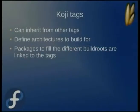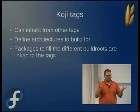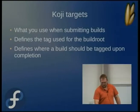Koji tags inherit from other tags and define which architectures to build for. In one Koji hub, you might have 50 tags with builders that do i686 only on 32-bit machines, other 64-bit machines, and some Itanium. You can use different tags to build to different architectures. Targets define what you use when submitting your build — you specify a target, and it defines what's used to populate the build root and where the results go at the end.